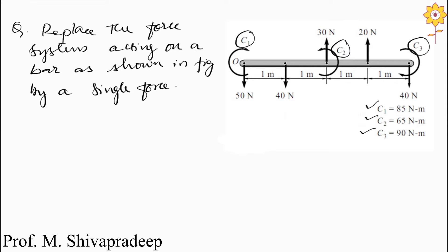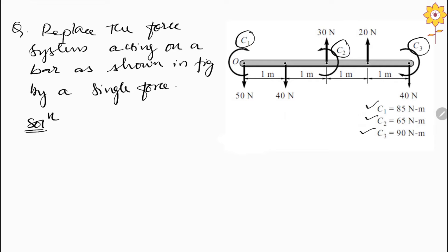In the previous video we saw how to find the resultant of a parallel force system in four steps, and we are going to use those steps now. The very first step is to find the resultant: R equals summation of F, which is the algebraic sum of all the forces in the system. We have five forces in total.